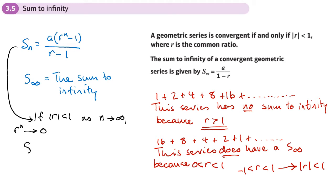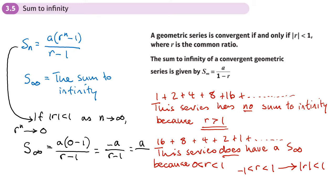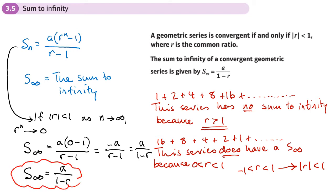So the sum to infinity: the a is still there, and r to the n becomes zero, giving us a over r minus one. That simplifies — multiplying top and bottom by negative one — to a over one minus r. This is the important result: the sum to infinity, if it exists, equals a over one minus r. It only exists if the modulus of r is less than one.